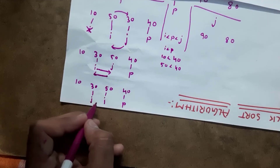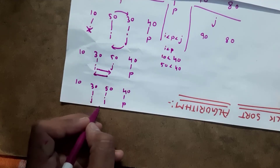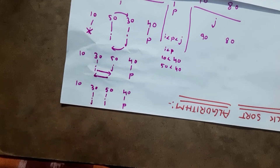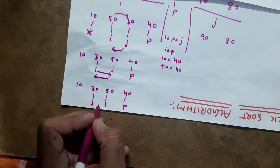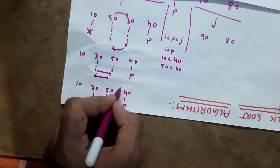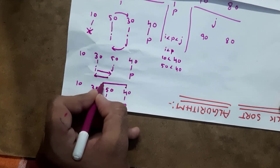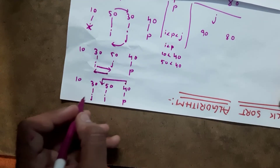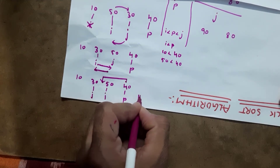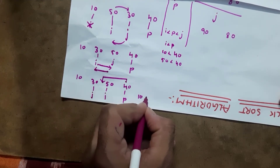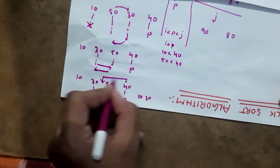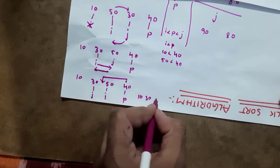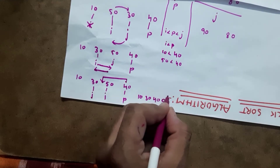Whenever j comes before i, we stop swapping. Place pivot 40 between j (30) and i (50). The left subarray becomes: 10, 30, 40, 50 — all arranged in sorted order from small to big.